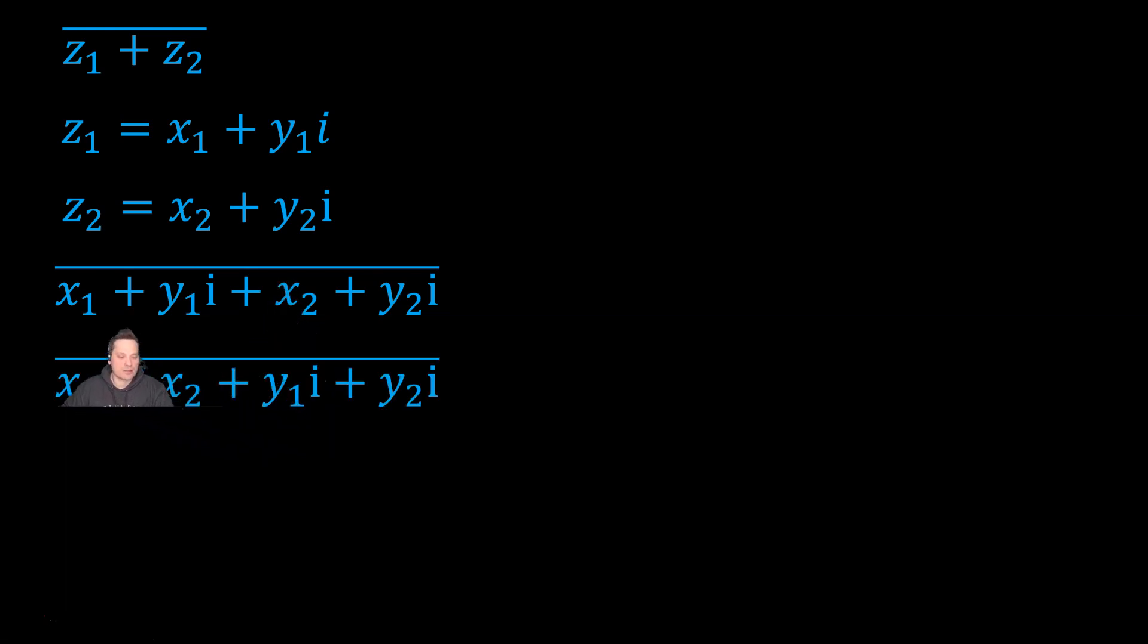Next, I'm going to regroup things. I'm going to put the x sub 1 together with x sub 2, and I'm going to put the y sub 1 together with the y sub 2. So it looks like x sub 1 plus x sub 2, and then plus y sub 1 i plus y sub 2 i.